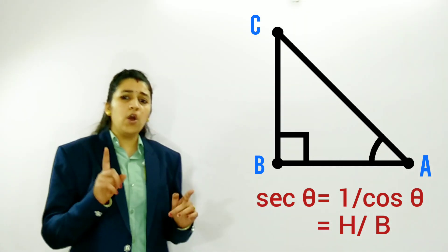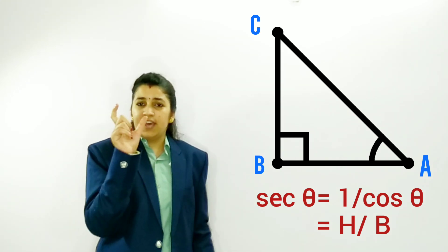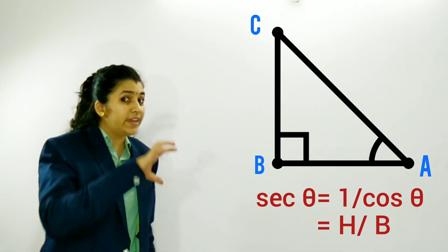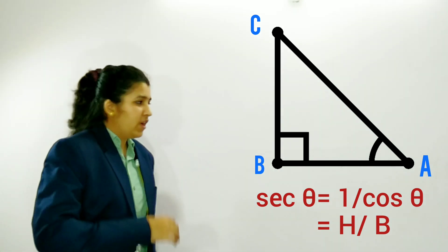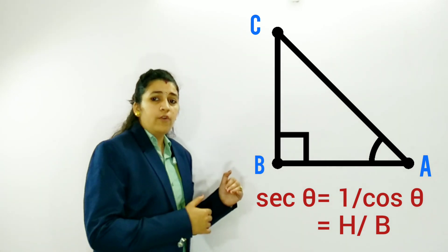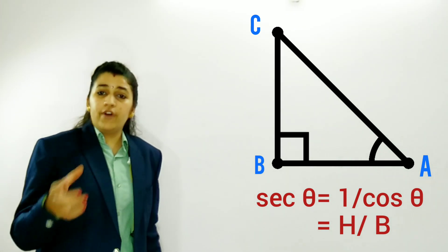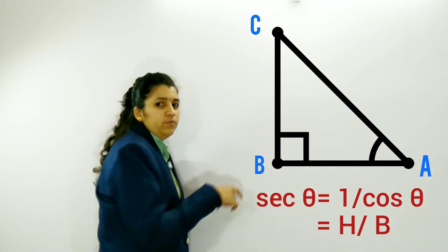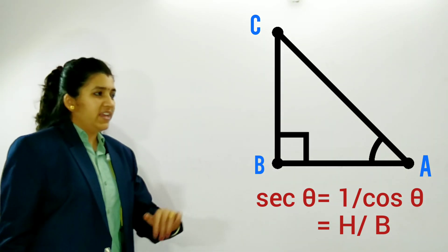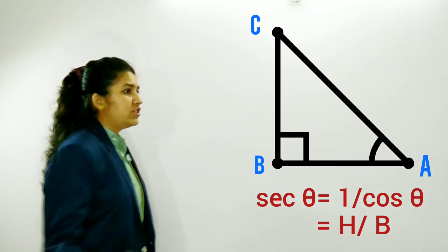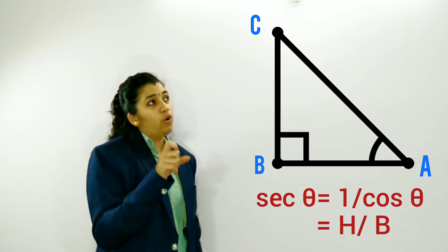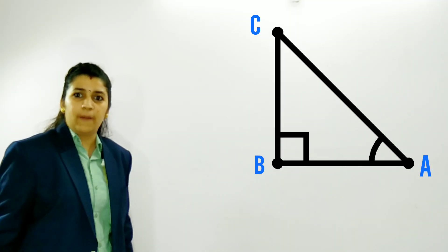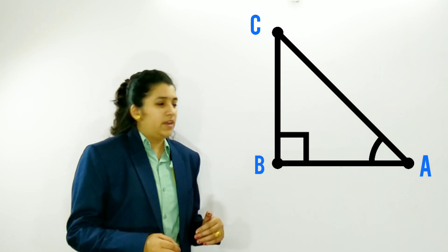Here's a way to remember: look at the ratio 'sec' — it does not have 'co', so it is the reciprocal of cos theta. The ratio which has 'co' will be the reciprocal of the one without 'co'. So sec theta equals 1 upon cos theta. Similarly, cosec has 'co', so just remove 'co' to find sin theta — cosec theta equals 1 upon sin theta.